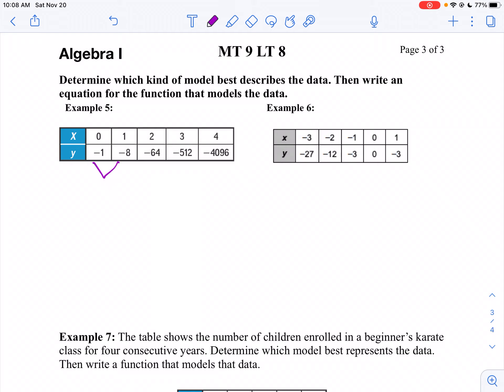So let's do that. Negative 8 divided by negative 1 is 8. Negative 64 divided by negative 8 is 8. Negative 512 divided by negative 64 is 8. And negative 4096 divided by negative 512 is 8. So this is exponential.